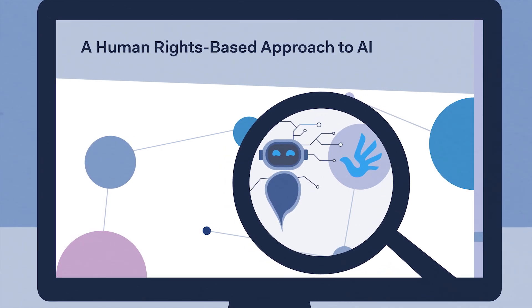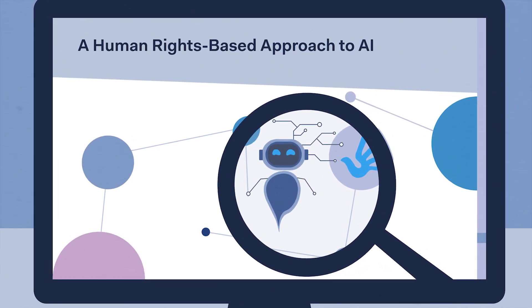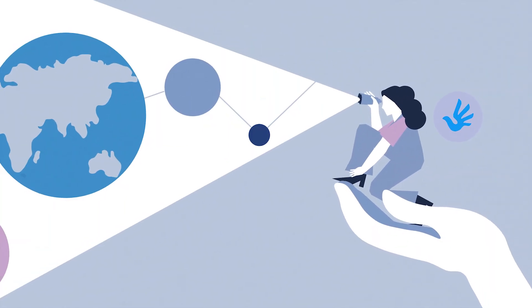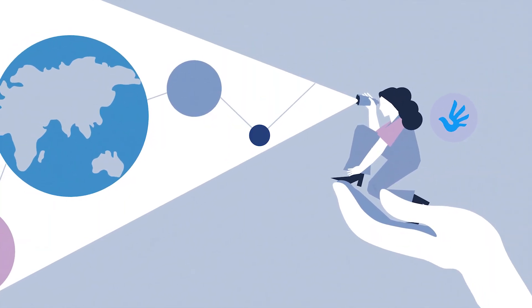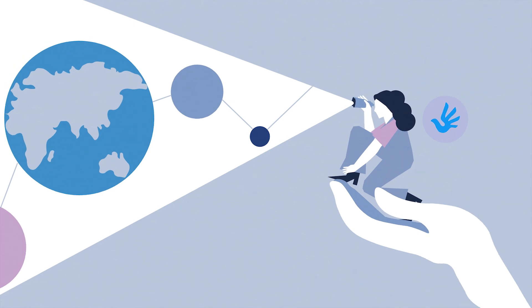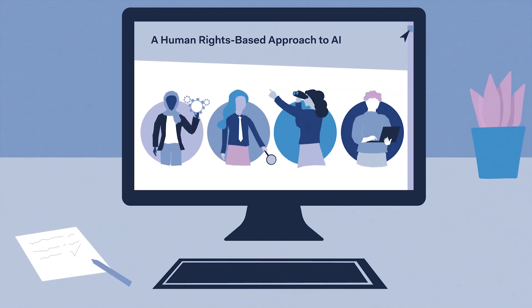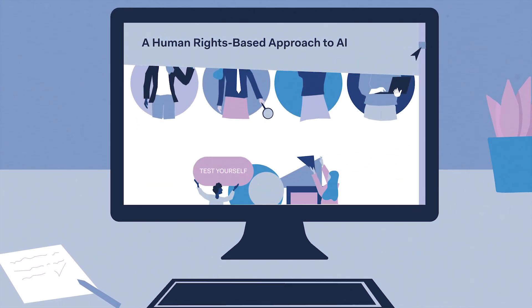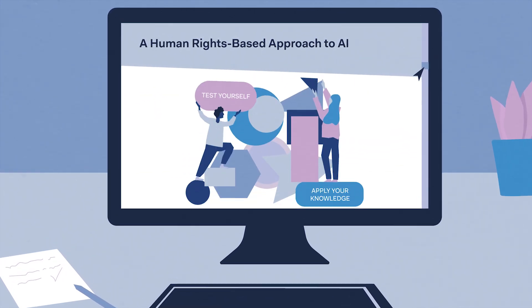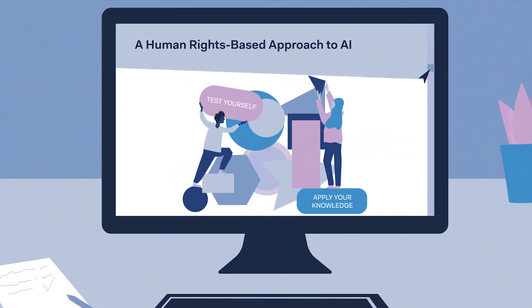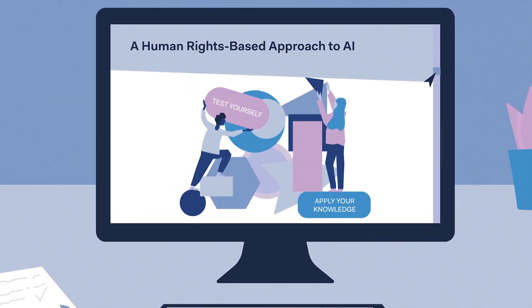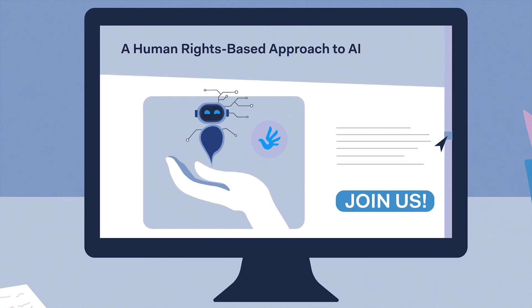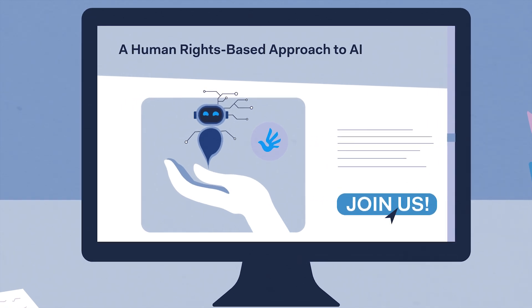Using these three different areas, the MOOC explores the human rights impacts of AI. We show how and why a human rights-based approach is a key tool. We ask experts from around the world to help you see the issues that matter. We use a learning-by-doing method that lets you test and apply your knowledge. Come join us — let's push boundaries and inspire human rights-based change.